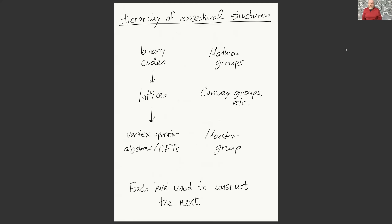Why is this coming up in the current summer school? One way of thinking about it: exceptional structures in mathematics come in a sort of hierarchy. There are certain discrete combinatorial objects—think binary error correcting codes and exceptional groups like Mathieu groups that act on them. Using these combinatorial objects you can build geometric objects like the Leech lattice.